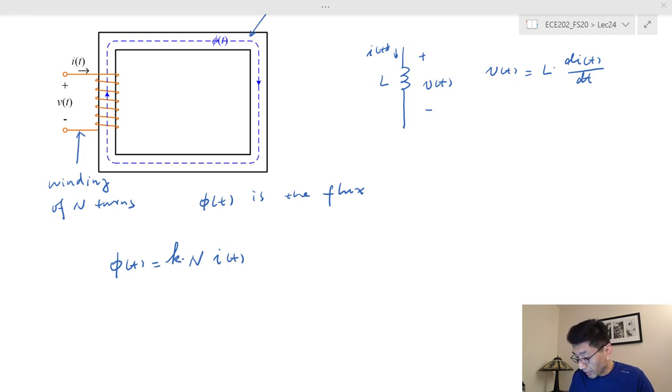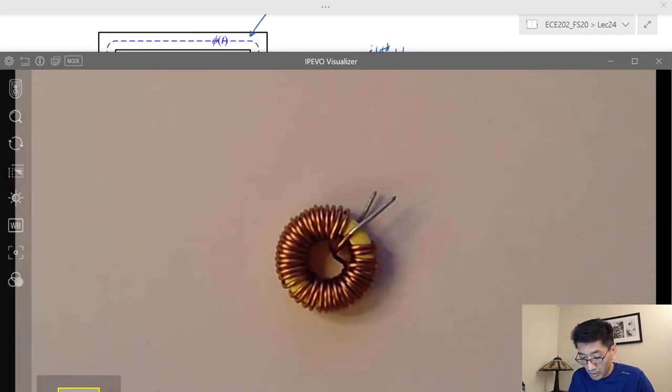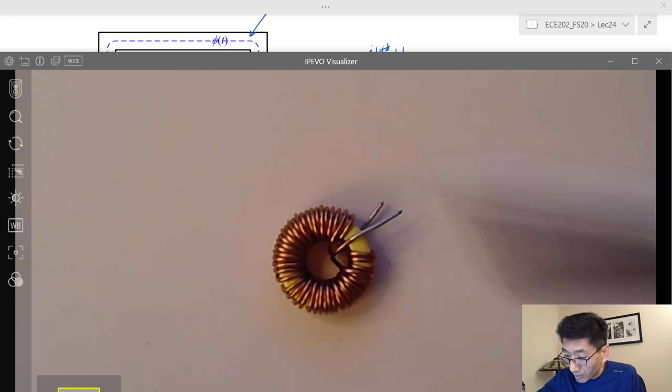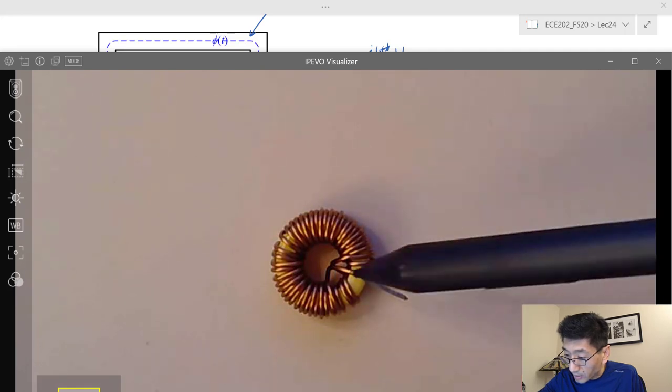I want to show you the actual inductance I have in front of me. Let me bring the document camera here. This is the inductance we have - the copper wire we call winding with N turns. I don't really know how many turns, but this is literally inductance - 100 microhenry we used a couple times before.